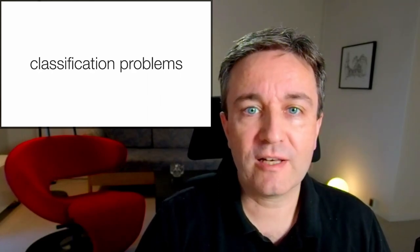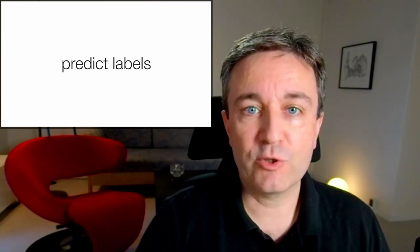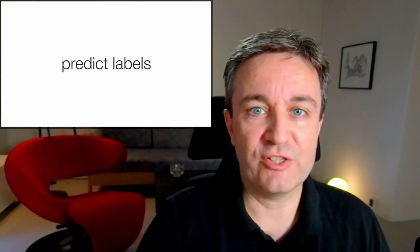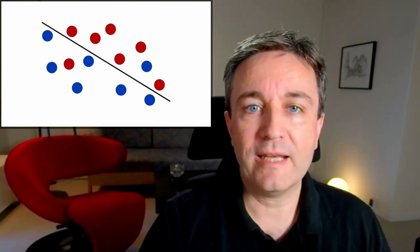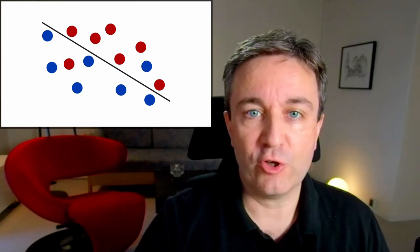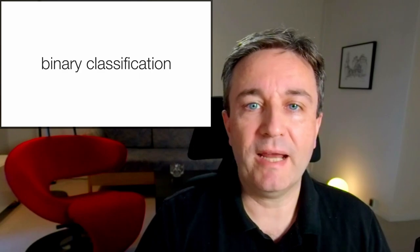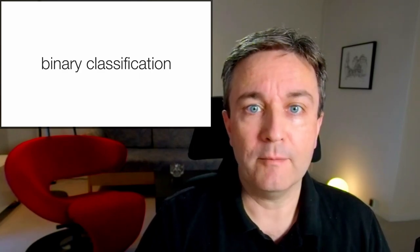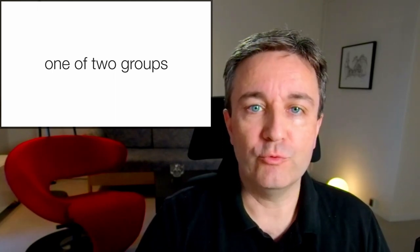The other and most common class of problem is classification problems. In this case, we're trying to predict discrete labels instead. So in this case, we would want to, for example, separate the red from the blue dots by making some decision surface that separates them. This is an example of binary classification, separating blue from red, in which case you're trying to put each example into one of two groups.